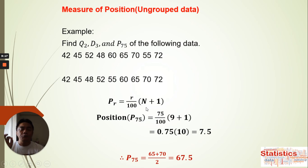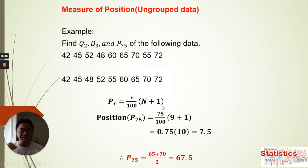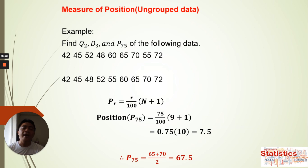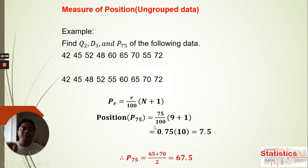To summarize: for every measure of position, substitute the value that corresponds to what you're looking for. If you're looking for P50 or P60, use 50 or 60 as the value of r. For decile 6, 8, or 9, use that number as r. Substitute into the formula, count the number of data values for n, find the position, then look back at the arranged data to find the actual value.